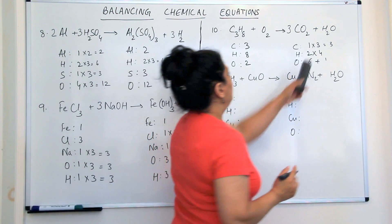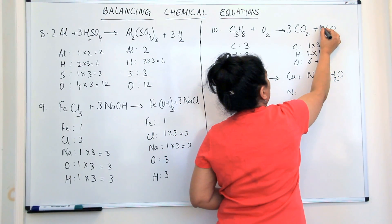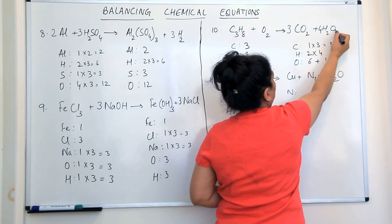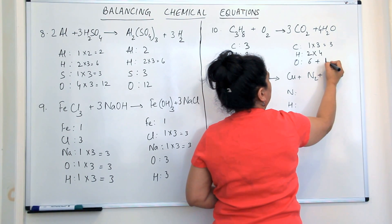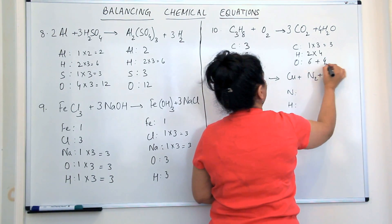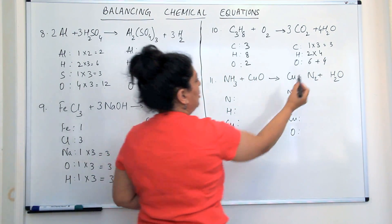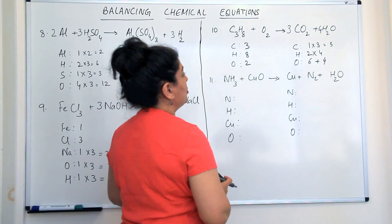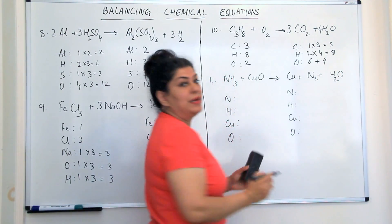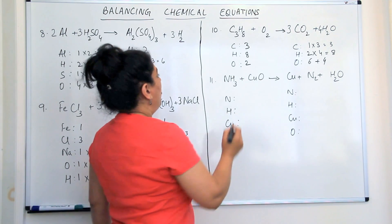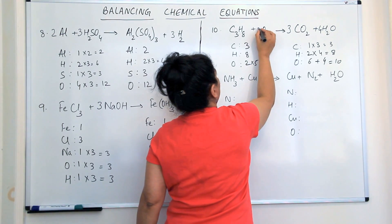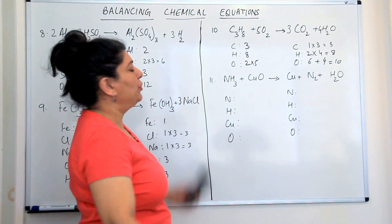In order to balance hydrogens, the part that has hydrogen is water. So this would be four water molecules. The moment I multiply water by four, hydrogens become eight, but oxygen from water becomes four — one times four is four. So now the total oxygens on the product side: six plus four is ten. Hydrogens are balanced, carbons are balanced, but I'm now left with oxygen. Six plus four is ten, so in order to make the reactant oxygen ten, I should multiply O2 by five. So this would be five. Equation is balanced.